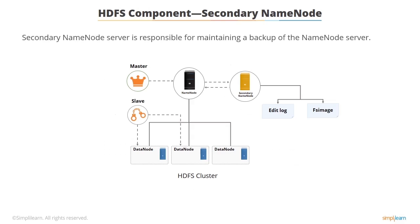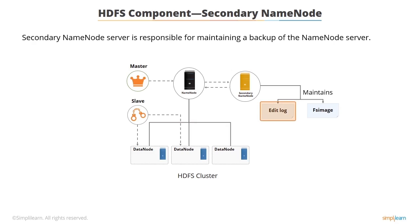There can be only one secondary name node server in a cluster. Note that you cannot treat the secondary name node server as a disaster recovery server. However, it partially restores the name node server in case of a failure. The secondary name node server maintains the edit log and namespace image information in sync with the name node server, though at times namespace images may not be updated, so you cannot totally rely on it for recovery.